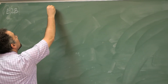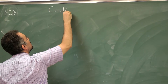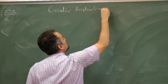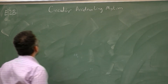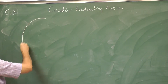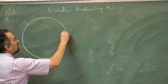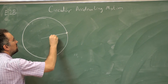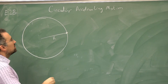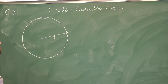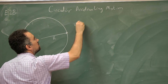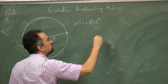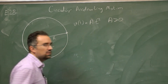This problem is about circular accelerating motion. A particle is moving on a circular path of radius r, and its linear speed on the circle — which is a scalar — is given by a times t squared, where a is a constant greater than zero.